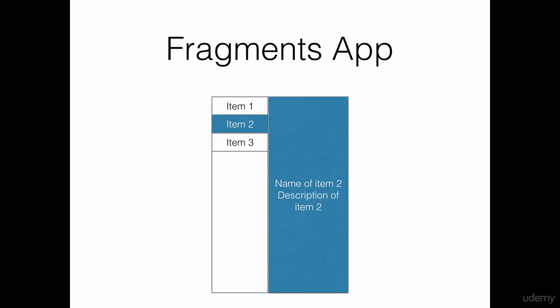If you select item number two, the right-hand side fragment is going to show the name and description of item number two, and the same is the case for item number three. Instead of generic items, we will use options like breakfast, lunch, and dinner. On the right-hand side, when you select a particular option, the appropriate items are going to be presented — for example, if you select the breakfast option, you will be presented with breakfast items in the second fragment.